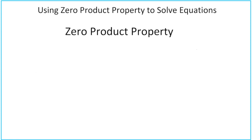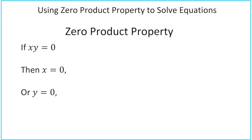Let's go ahead and take a look at how zero product property can be defined. If x times y equals zero, then x equals zero, or y equals zero, or both x and y equal zero. Those are the only options that will make that equation true.